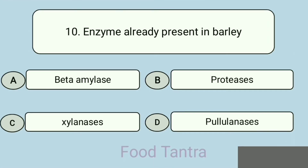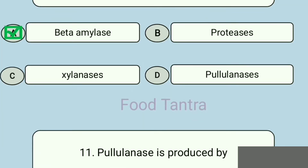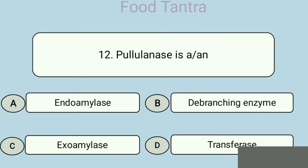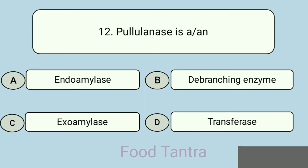Question 10: Enzyme already present in barley — Option A: Beta amylase. Option B: Proteases. Option C: Xylanases. Option D: Pullulanase. Correct answer: Option A. Question 11: Pullulanase is produced by — Option A: Micrococcus. Option B: Kluyveromyces. Option C: Rhizomucor. Option D: Klebsiella. Correct answer: Option D. Question 12: Pullulanase is a — Option A: Endoamylase. Option B: Debranching enzyme. Option C: Exoamylase. Option D: Transferase. Correct answer: Option B.